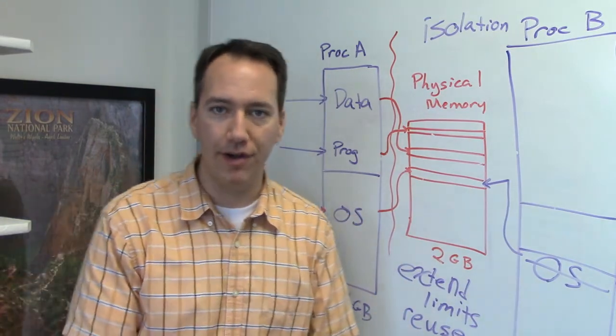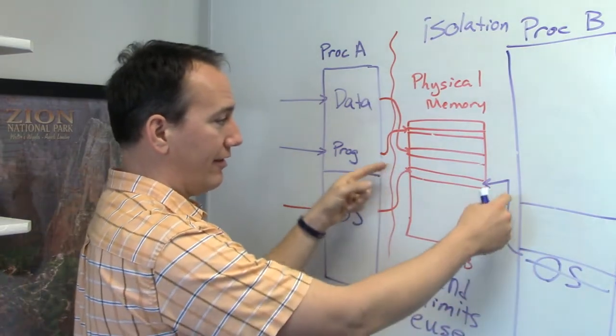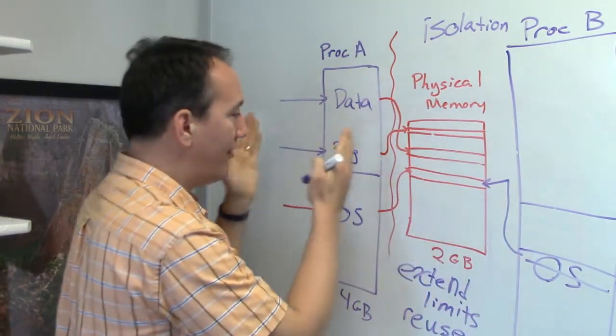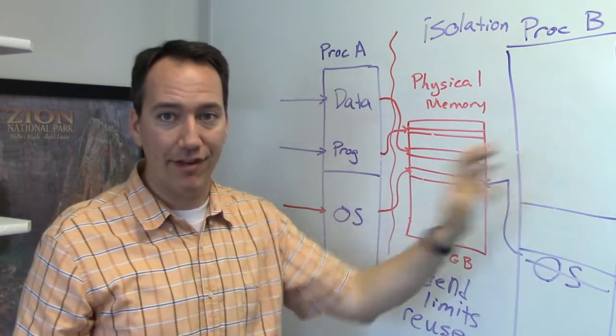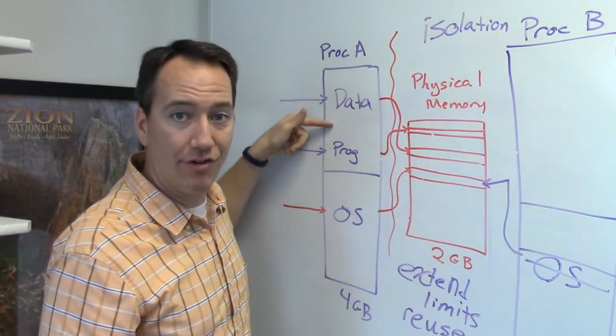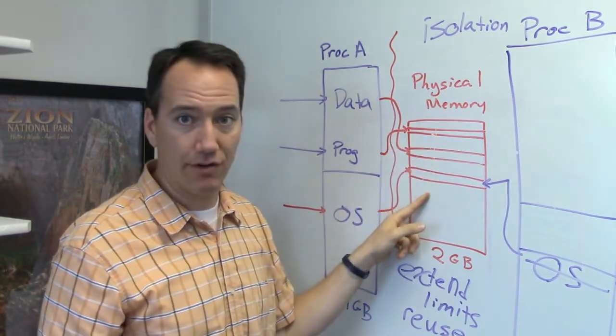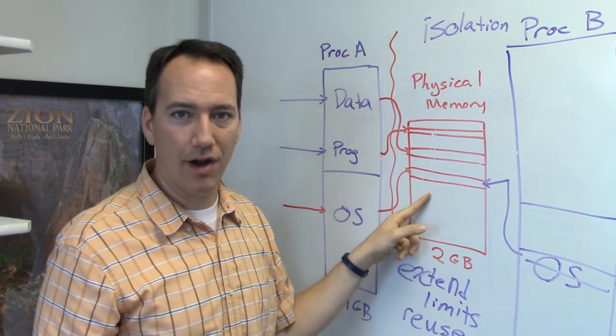So because the hardware and the operating system are doing this translation, it's impossible for one program to access the memory of another program. All they can do is access their own virtual address, and that is controlled by the hardware and the operating system to actually go to a physical address on the hardware.